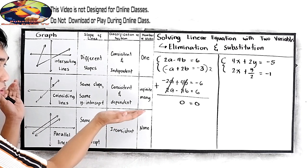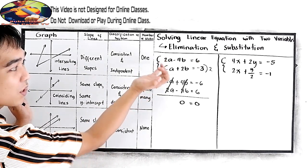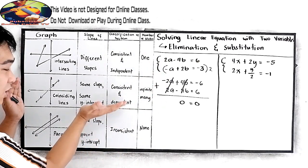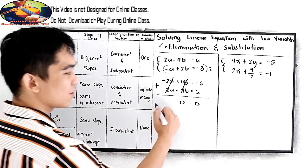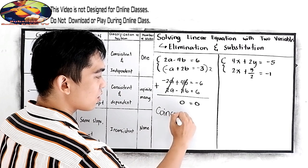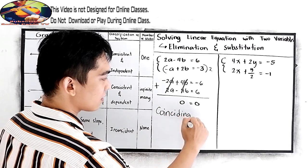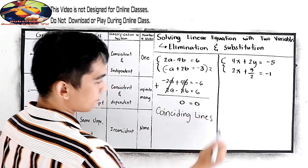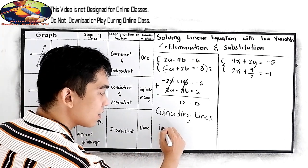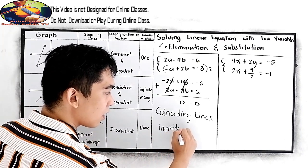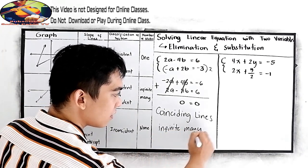Okay. Now it's clear to you what it looks like if we're going to solve our equations. The coinciding lines. This will give us coinciding lines. Infinite many solution.